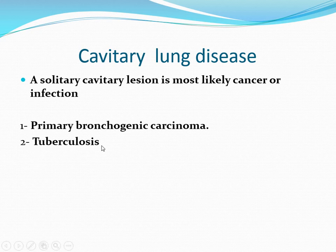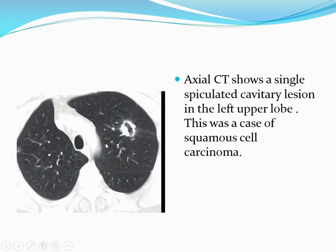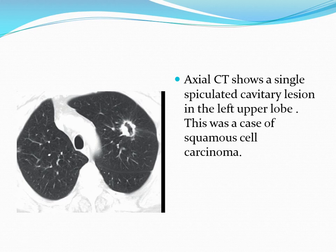Tuberculosis produces upper lobe cavitation. Axial CT shows a single spiculated cavitary lesion in the left upper lobe. This was a case of squamous cell carcinoma — you can see the thick wall with spiculation and central cavitation, most likely squamous cell.